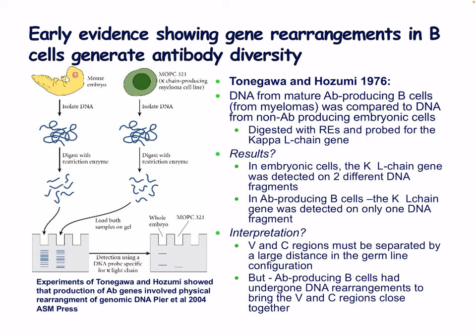Experimental evidence compared DNA from mature antibody-producing B cells from myelomas to DNA from non-antibody-producing embryonic cells. In embryonic cells, the kappa light chain gene was detected on two different DNA fragments, whereas in antibody-producing B cells it was detected on only one DNA fragment. This indicated that the variable and constant regions must be separated at large distances in the germline configuration, but antibody-producing B cells had undergone DNA rearrangements to bring the V and C genes close together.